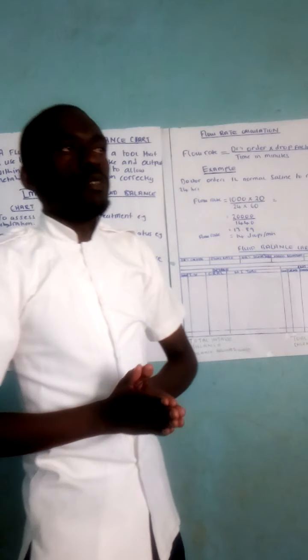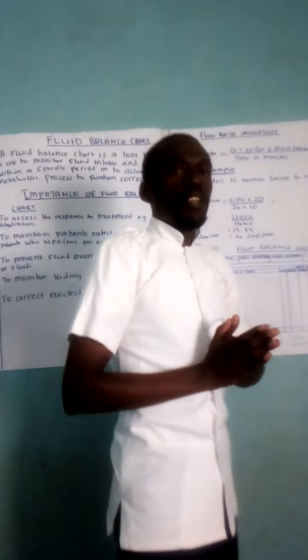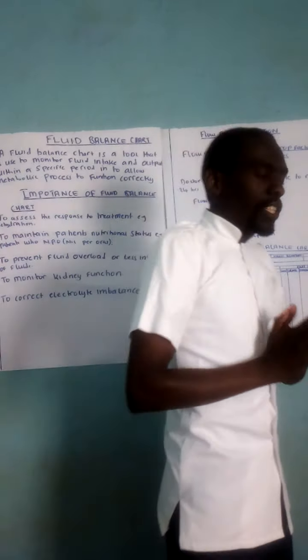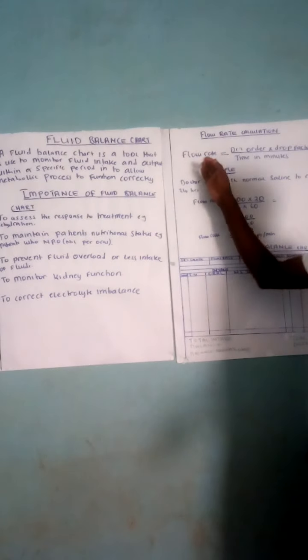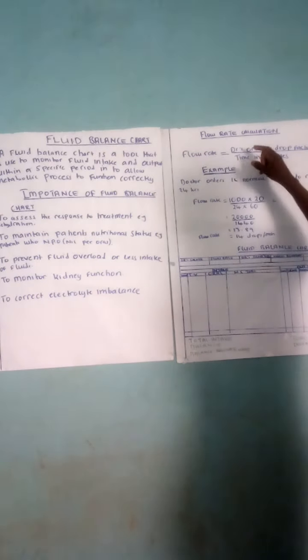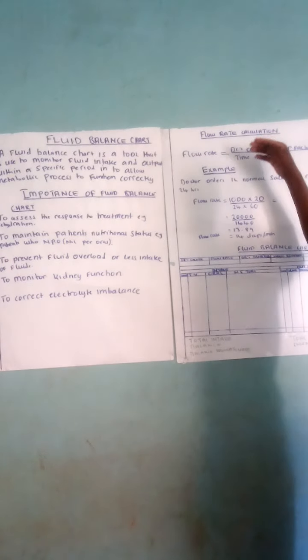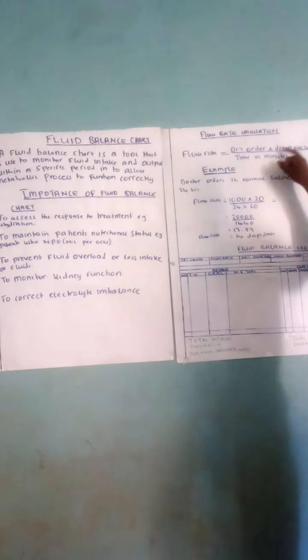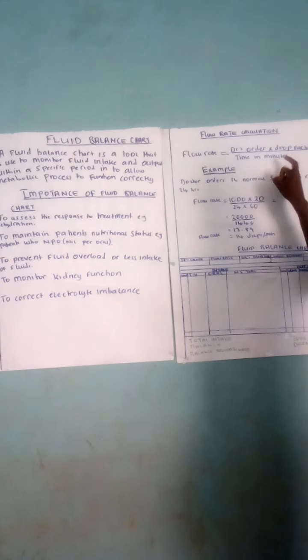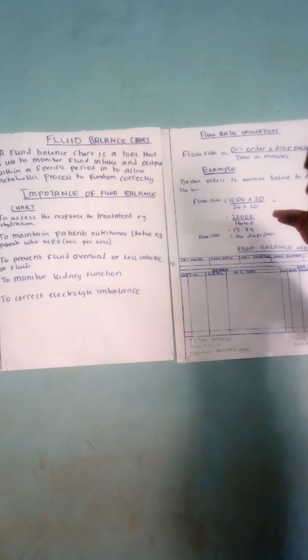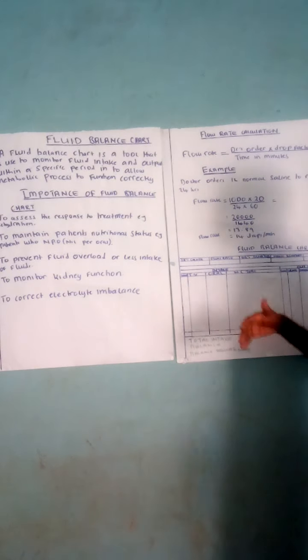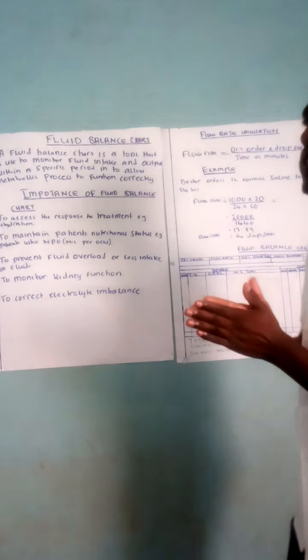When a fluid has been prescribed, it has to run at a certain flow rate. There is a formula used to administer fluids. The flow rate equals the doctor's order, which is the amount of fluid to be infused, multiplied by the drop factor, divided by the time in minutes.